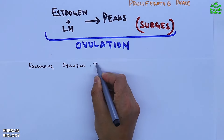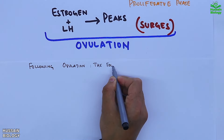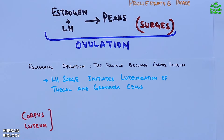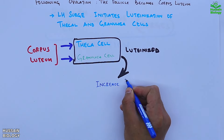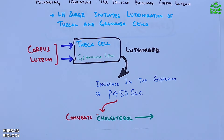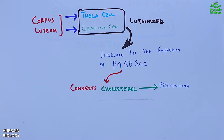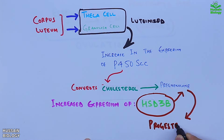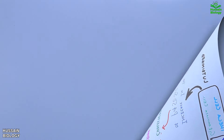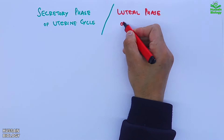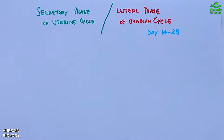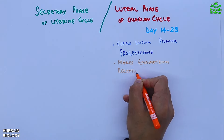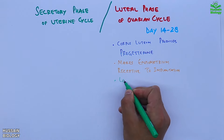Following ovulation, the follicle becomes the corpus luteum. The LH surge initiates luteinization of thecal and granulosa cells. These luteinized cells show increased expression of the P450 SCC enzyme, converting cholesterol to pregnenolone. The enzyme HSD3B then acts on pregnenolone and converts it into progesterone, marking the entry into the luteal phase. In the luteal phase, the corpus luteum produces progesterone, which makes the endometrium receptive for implantation, while FSH and LH remain at low levels.